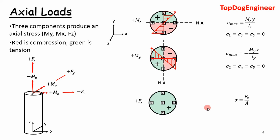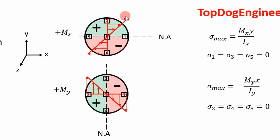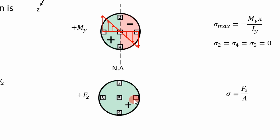For the axial loads, we've got to look at three components: the bending moment in the Y direction, bending moment in the X direction, and the axial load in the Z direction. We're using the same analogy as in the previous video where red indicates compression and green indicates tension. For the X moment, applying the right-hand rule, the stress distribution is given by M times Y over I. Our worst case stresses occur at element two and four. In the Y direction, we use the same equation form, and our worst case stresses occur at three and one, with compression at one and tension at three. The axial distribution is uniform and given by force over area.